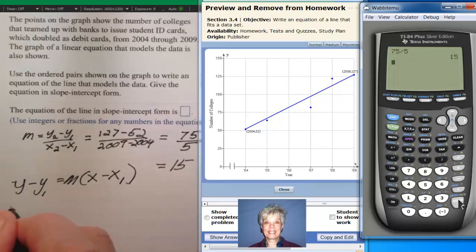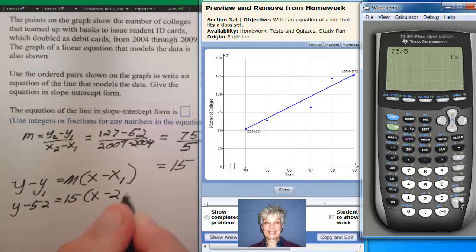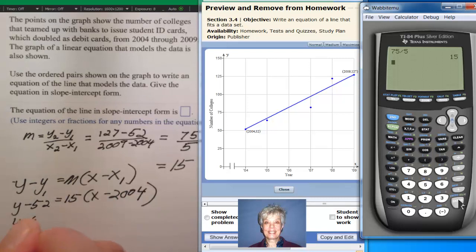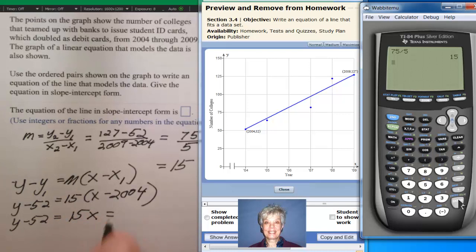Now, let's find the equation of the line. I'm going to use y minus y1 equals m times x minus x1. So we'll have y minus 52 equals 15 times x minus 2004. So y minus 52 equals 15x and we're going to multiply - that's going to be a minus right there.